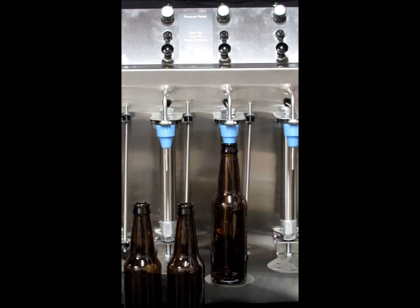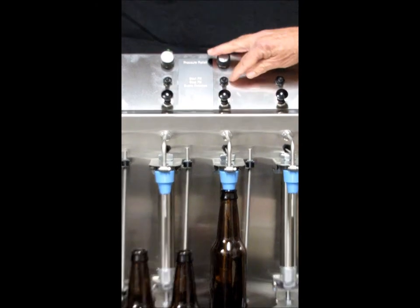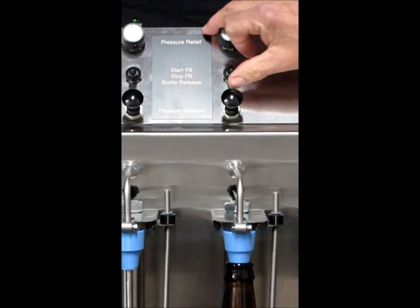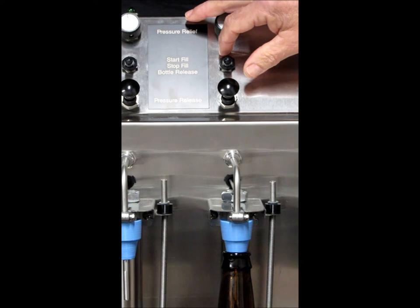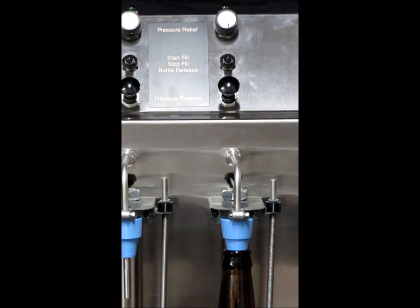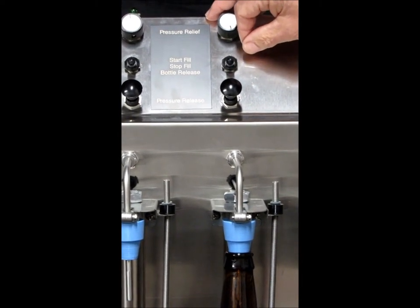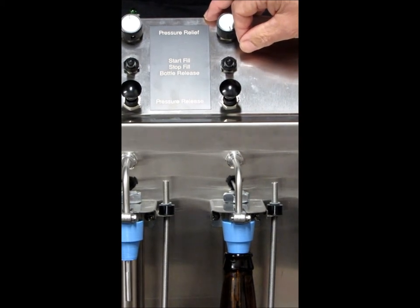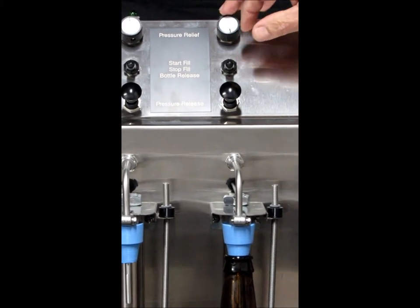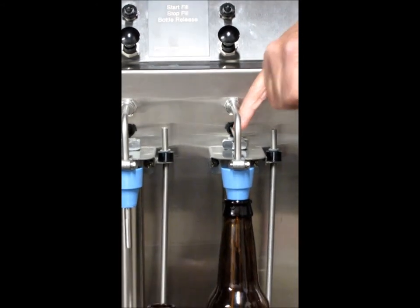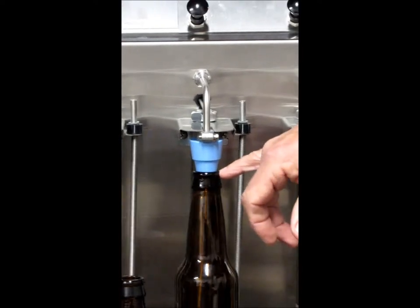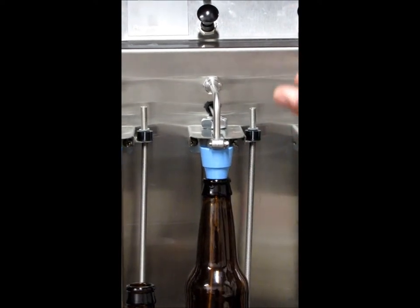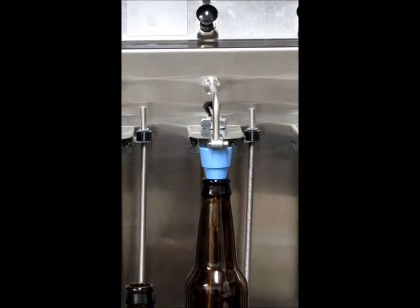What will happen now is I will come up here and the three position toggle switch, you quickly go up to the top position which says start fill. Now before I do that, I want to walk you through what's going to happen. When I go up to there, to the start fill, initially you won't see anything happening because the CO2 is coming out of the smaller tube, pressurizing the bottle. You will see the bottle pull off the stopper a little bit as the air escapes as the CO2 is going into the bottle. That is about a three to four second process.